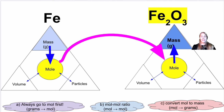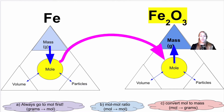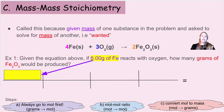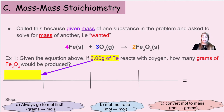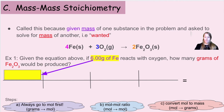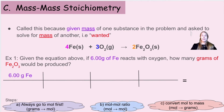Here's our plan: we have six grams of iron and we're looking for grams of Fe₂O₃. First, we convert from mass to moles of Fe using our equivalency statement. Then we use the mole-to-mole ratio to convert from Fe to Fe₂O₃. Once we have moles of Fe₂O₃, we convert back up to grams of Fe₂O₃. Those three steps are shown in the colored bubbles on the slides.